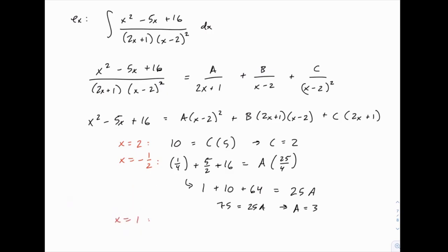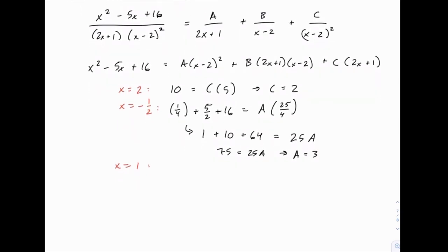Then lastly, if we plug in x equals 1, on the left side, we get 1 minus 5, that's negative 4, plus 16 is 12, and then on the right side, we get a times negative 1 squared, plus b times 3 times negative 1, plus c times 3, and we know what a and c are, so 12 equals 3 minus 3b plus 6, and so you can figure out that b equals negative 1.